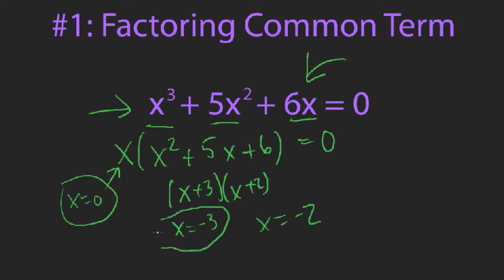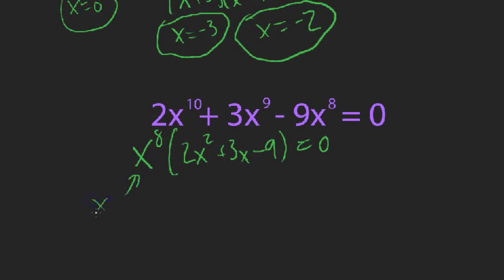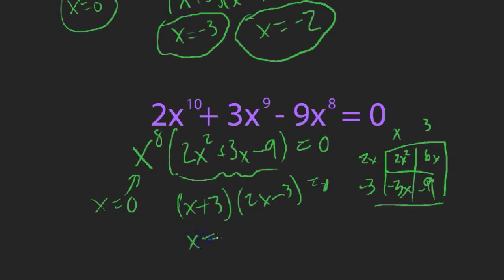Here's another example: 2x¹⁰ + 3x⁹ - 9x⁸. All terms share x⁸, so factor it out to get x⁸(2x² + 3x - 9) = 0. One solution is X = 0. For the quadratic, use the box method — looking for factors of -18 that add to 3, which are 6 and -3. This gives (x + 3)(2x - 3), so the other solutions are X = -3 and X = 3/2.